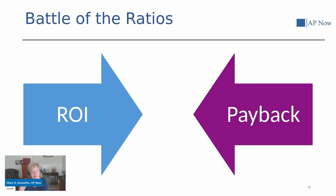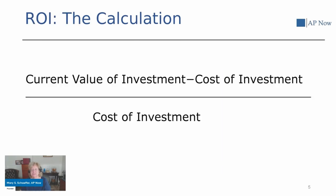Typically when you go to make a presentation to management when you're looking to get some funds, this is one of the calculations you'll include. This is the metric that is frequently used to decide which projects will get a company's limited investment dollars. Often there are more projects competing for those limited investment dollars than there is money available, and many times the accounts payable projects just don't have the projected ROI as some other more lucrative investments. But don't give up — stick with us and we'll show you how to make sure this doesn't have to be the kiss of death for your dream project. Let's do a quick review of how ROI is calculated.